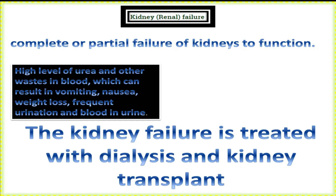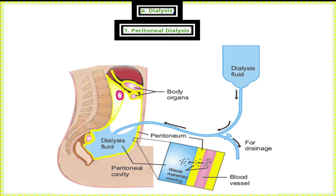For the treatment of kidney failure, we use two methods: one is dialysis and the other is kidney transplant. In dialysis, we clean the blood. There are two types of dialysis: one is peritoneal dialysis and the other is hemodialysis. In peritoneal dialysis, a dialysis fluid is pumped into the peritoneal cavity.